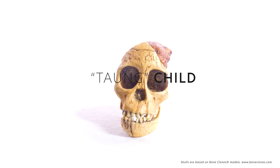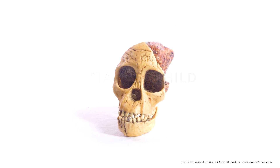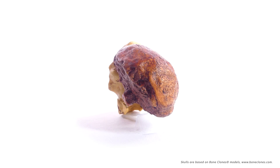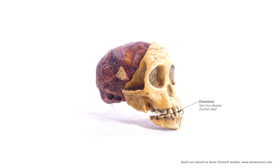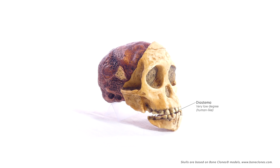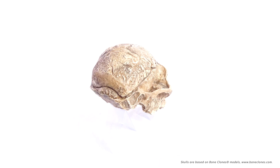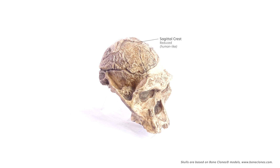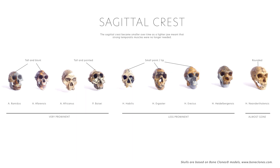Human-like features include a reduced sagittal crest, very small body sizes, and no gaps between the teeth. The sagittal crest was needed for the attachment of large temporalis jaw muscles, and its size decreased over time as the diet shifted towards food which did not require grinding.